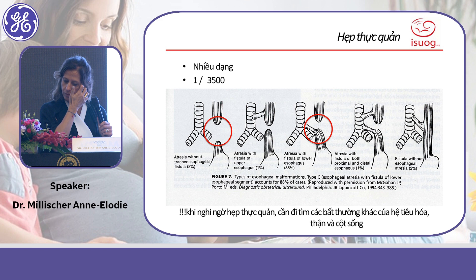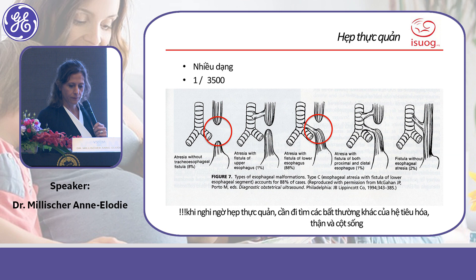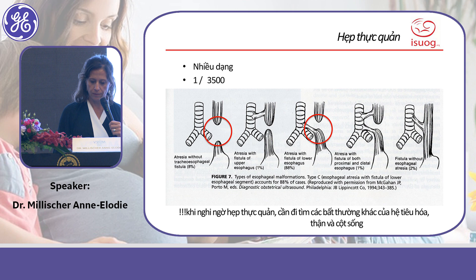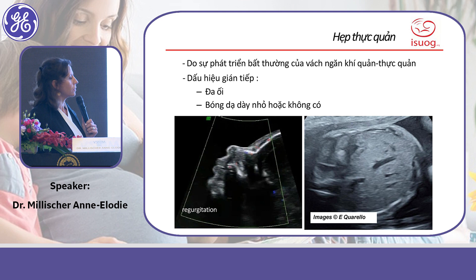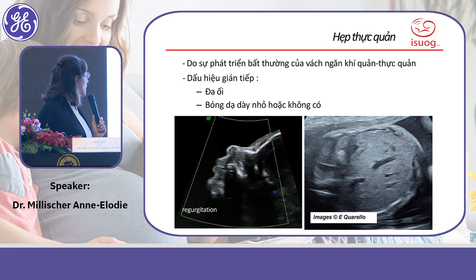The third image — the type with a distal fistula — represents 88% of cases. When we suspect esophageal atresia, we must look for other associated anomalies, including bone anomalies and kidney anomalies.